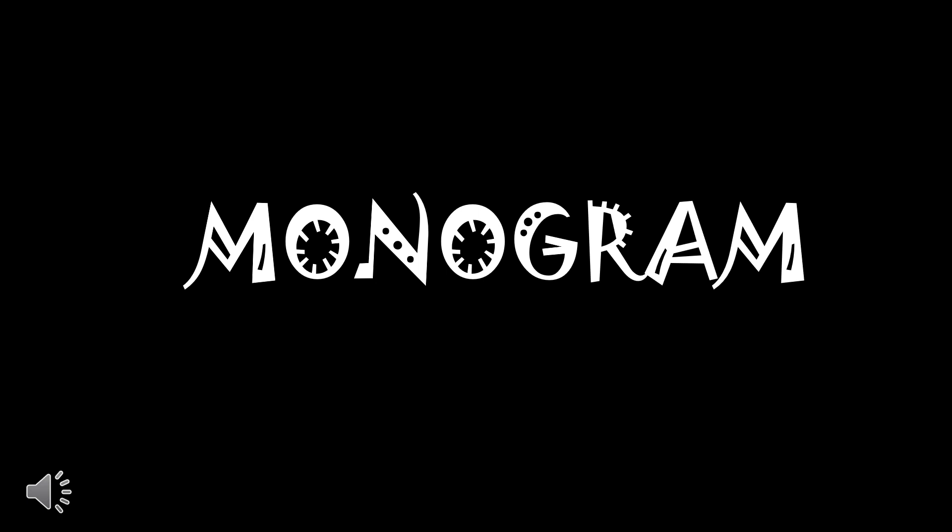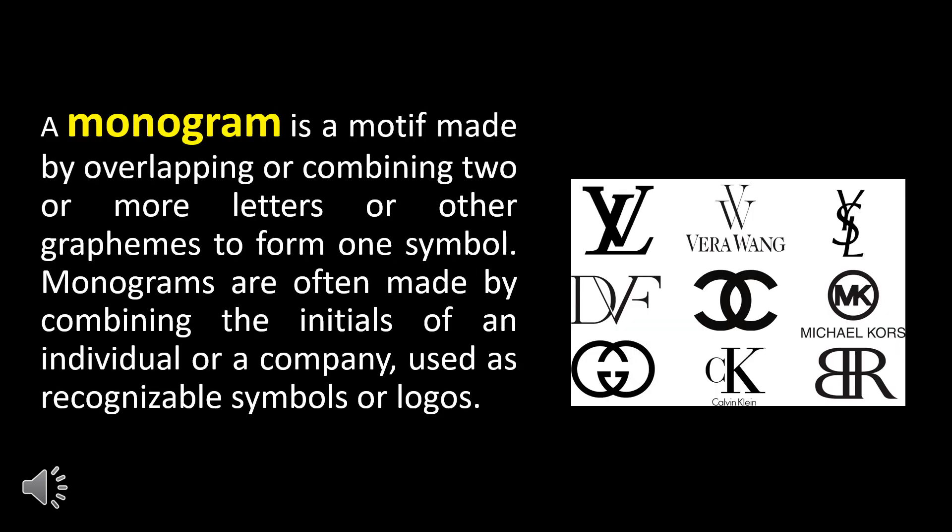Monogram: a monogram is a motif made by overlapping or combining two or more letters or other graphemes to form one symbol. Monograms are often made by combining the initials of an individual or a company, and are used as recognizable symbols or logos.